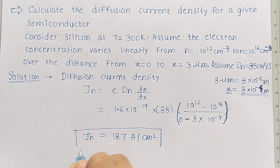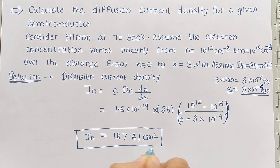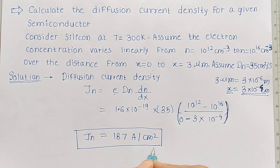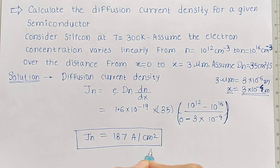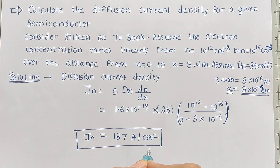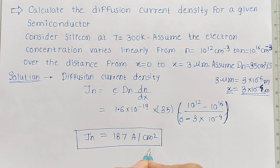In this way we can calculate the diffusion current density. In the case of semiconductors, diffusion current densities on the order of a few hundred amperes per square centimeter can be generated.